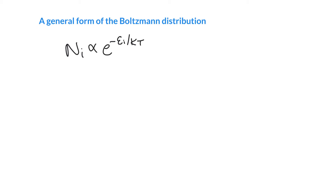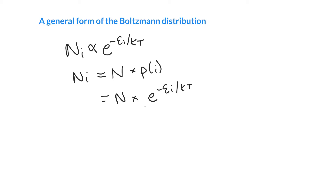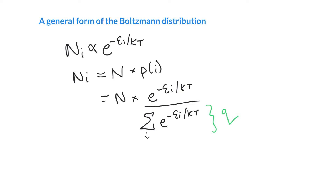Earlier we said the number of molecules in state i is proportional to e to the minus that energy over kT. We can sharpen this: the number in state i equals the total number times the probability of being in state i. That probability is e to the minus energy over kT divided by the sum of all those Boltzmann probabilities over all states. Dividing the individual Boltzmann factor by that total gives the true probability. This sum of all proportional probabilities is given the symbol q and is called the partition function.